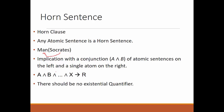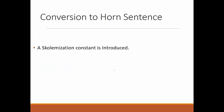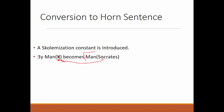These horn sentences do not have existential quantifiers. If we have a sentence of the form 'there exists at least one y such that y is a man,' to convert it into a horn sentence we substitute a Skolem constant — for example, substituting 'Socrates' for y — giving us the atomic sentence 'Socrates is a man,' which is a horn sentence.